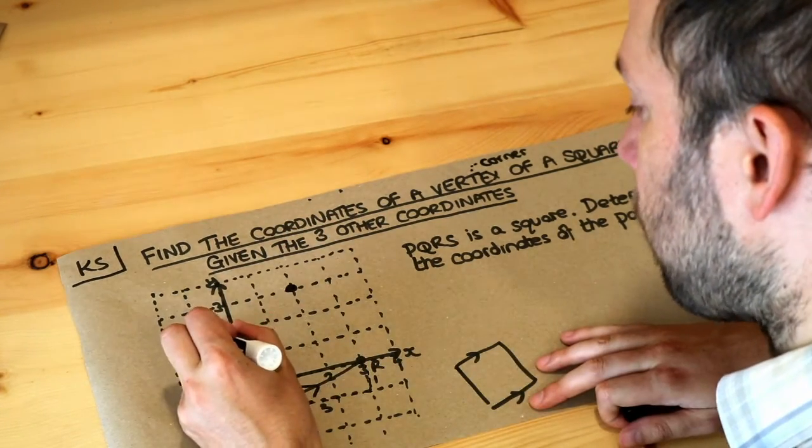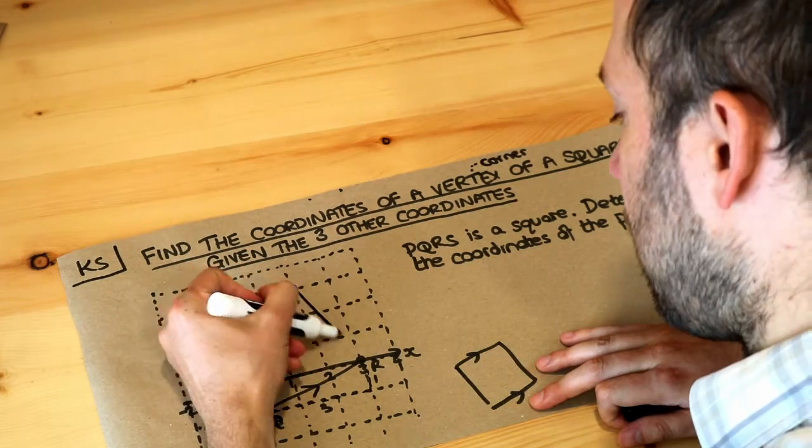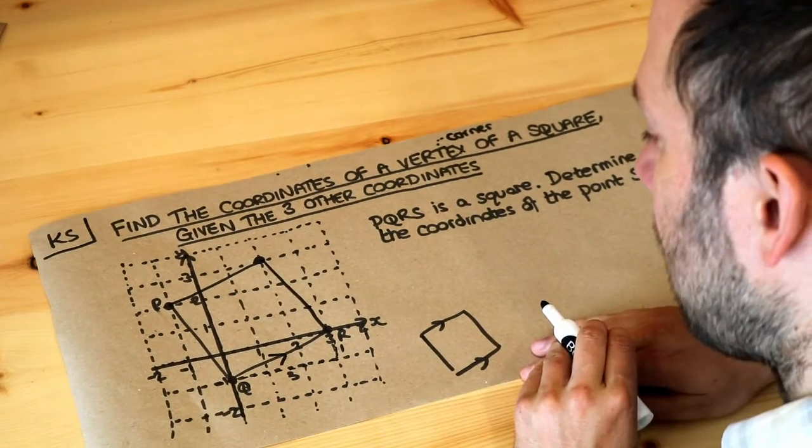And then let's just check that. If we draw that, you can see, voila, we do indeed have a square. There, awesome.